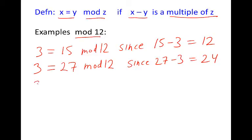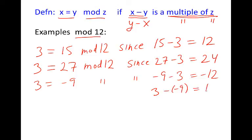I also know that 3 is equivalent to minus 9 mod 12 since minus 9 minus 3 equals minus 12, a multiple of 12. Note that if x minus y is a multiple of z, we also know that y minus x will also be a multiple of z. So to determine that 3 is equivalent to minus 9, I could have done 3 minus a minus 9 equals 12, which is also a multiple of 12.